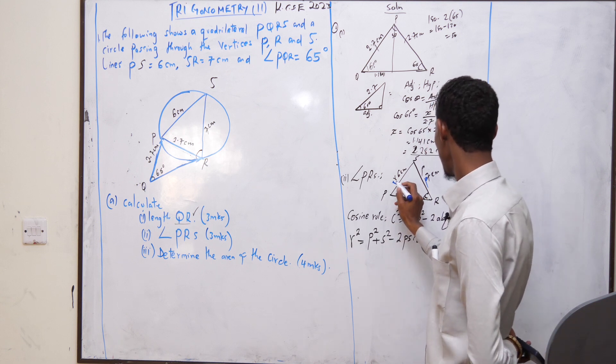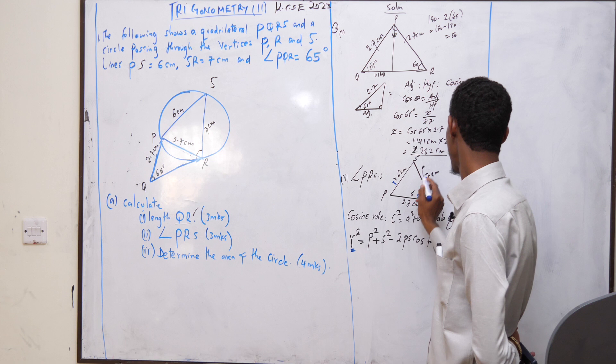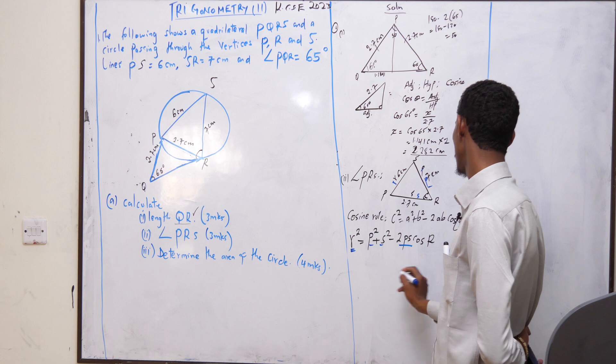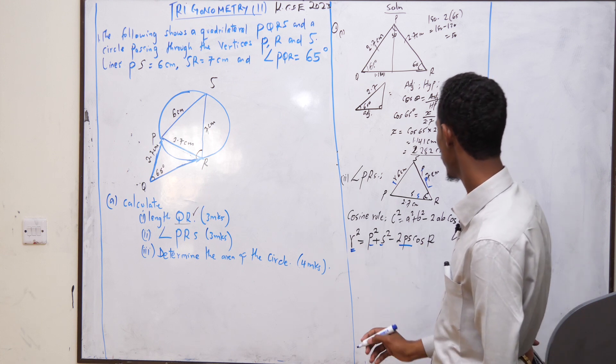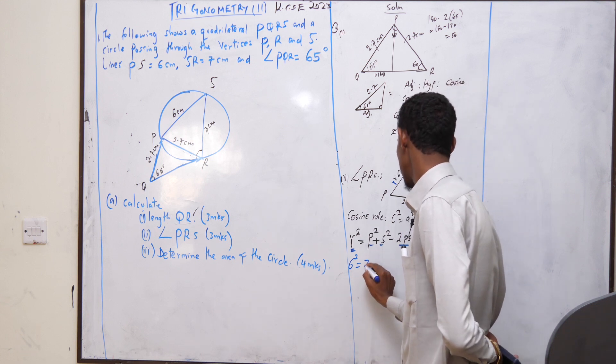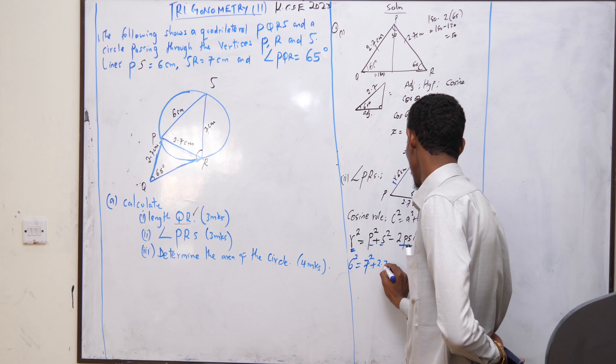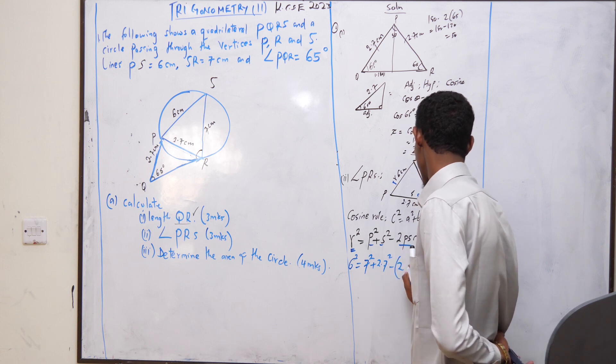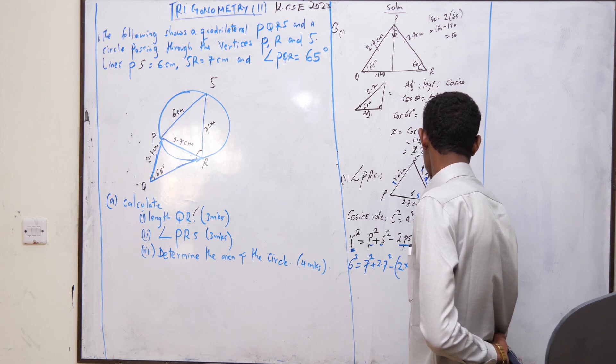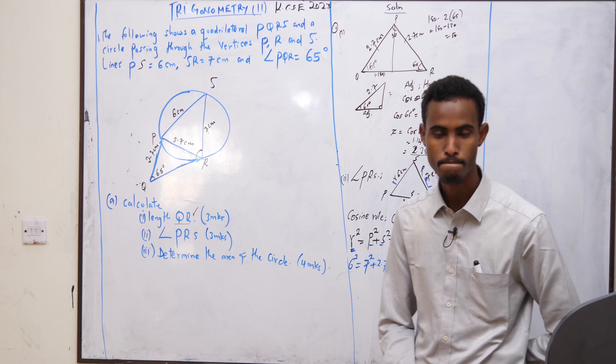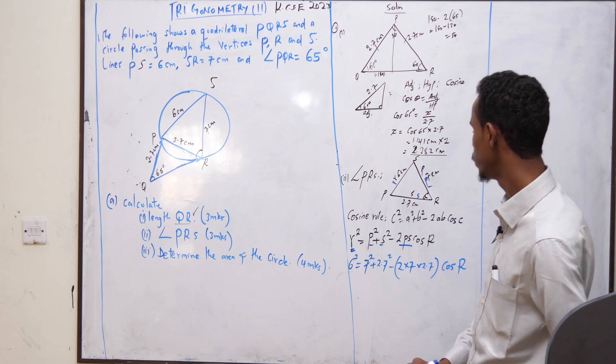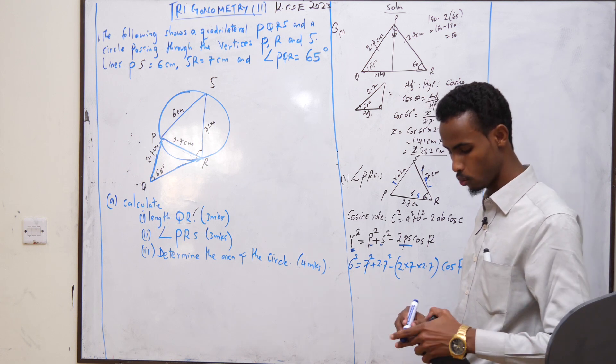We see R squared equals P squared plus S squared minus 2PS cos R. Our R squared becomes 6 squared equals our P squared, 7 squared, plus 2.7 squared minus into bracket 2 times 7 times 2.7 into bracket cos R.